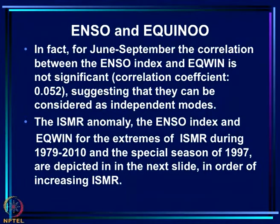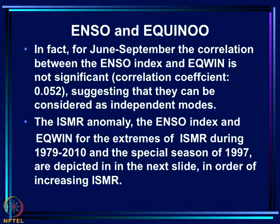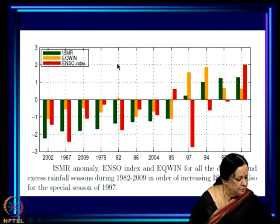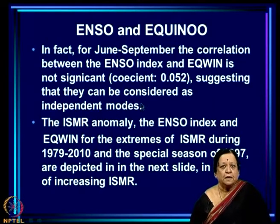For the June-to-September season, the correlation between the ENSO index and EQUIN is not significant — only about 0.052 — suggesting they can be considered as independent modes. Therefore, for this season they can be used as independent axes, and for any year we know both the ENSO index and EQUIN. We can use one as the x-axis and the other as the y-axis, and plot each year as a point in a phase plane of these two indices.